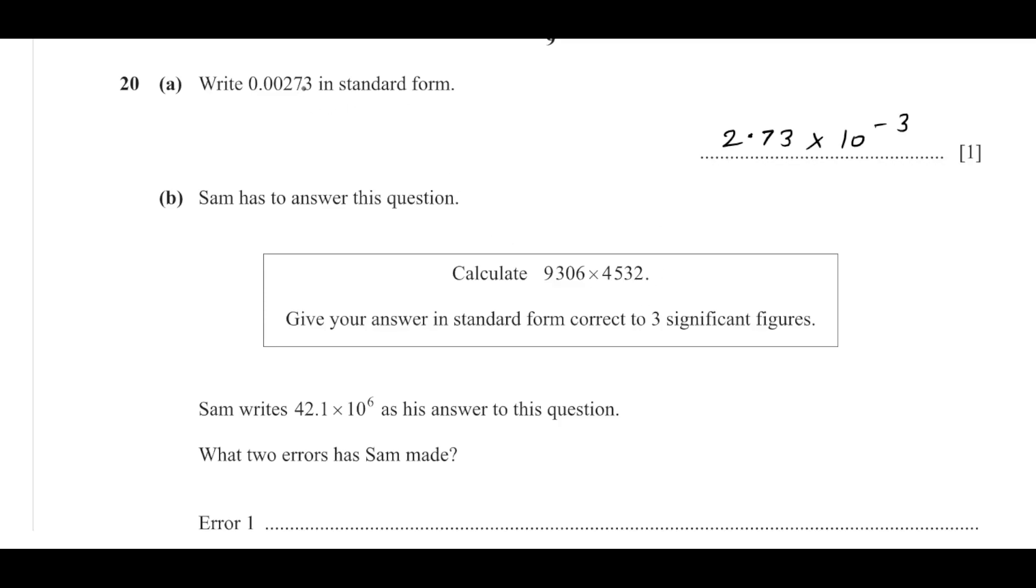Okay, the same as 273 is divided by 10 power 5. That way also you can do. You can say that this is 273 divided by 10 power 5. Or if you write 0.00273 in your calculator...